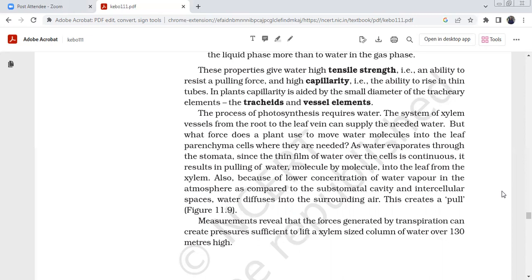The system of xylem vessels from the root to the leaf vein transports water. But what force does a plant use to move water molecules into the leaf parenchyma? As water evaporates through the stomata, a thin film of water over cells continues, resisting the pulling of water molecule by molecule into the leaf from the xylem.